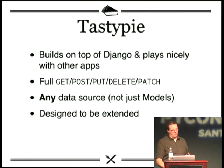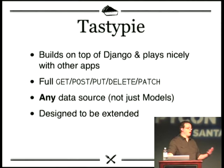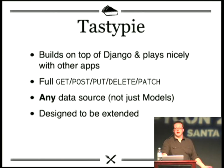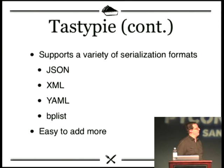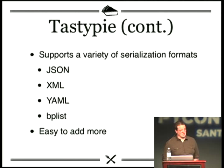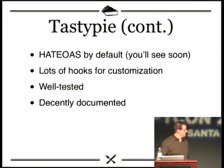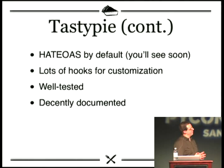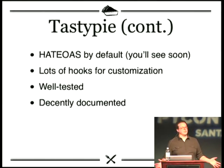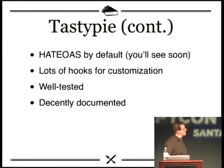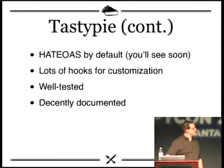There's the concept of being available for any data source. Lots of people choose to expose the ORM, but you may not want to expose your database structure to a client consuming your API. Out of the box, you get a wide variety of serialization formats: JSON, XML, YAML for those Ruby types, and binary PLists for iOS developers who get a big performance boost from using PLists. HATEOAS is the default. There are tons of places throughout TastyPie where you can extend the built-in API without touching TastyPie's source code at all. It hovers at about 80% test coverage, roughly 3,500 lines of test code, and is pretty decently documented.